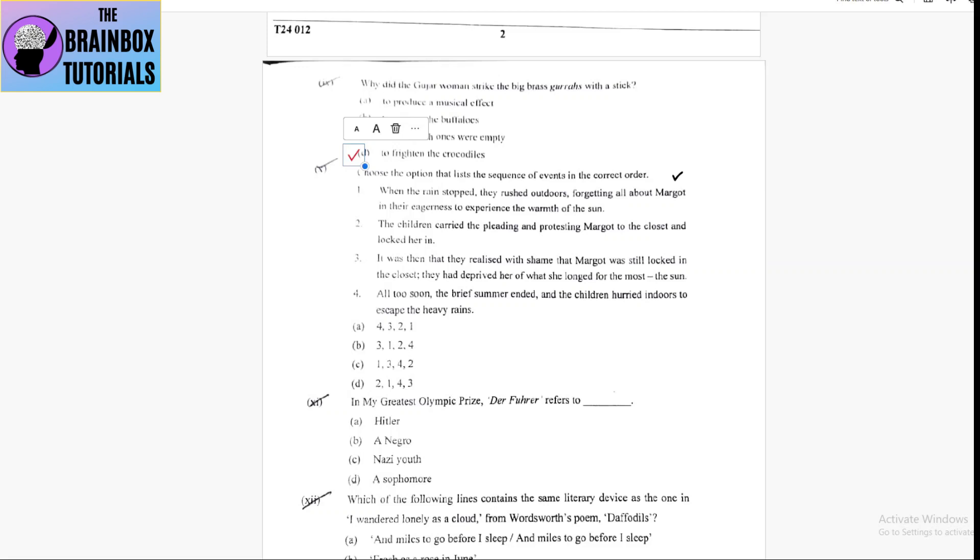And last of all, too soon, the brief summer ended and the children hurried indoors to escape the heavy rains. Here, first number is number 2, then number 1, then number 4, and then number 3. So, 2, 1, 4, 3 is the correct sequence, that is option number D.